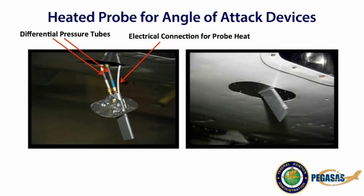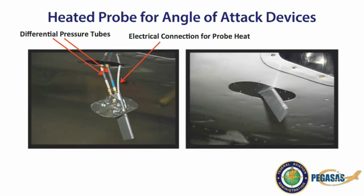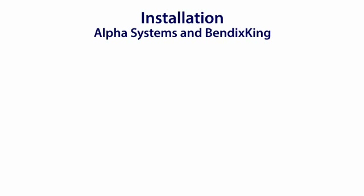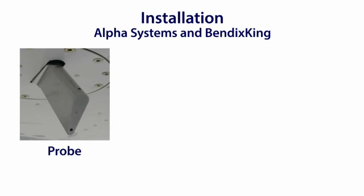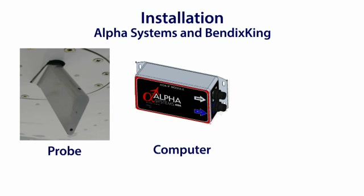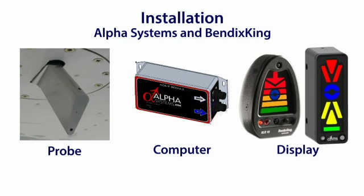It is recommended that probe heat be installed if the AOA system will be utilized in the IMC environment. The Alpha Systems and Bendix King devices utilize a three-part system: a probe that attaches to an inspection panel on the bottom of the aircraft's wing or fuselage, a computer to process inputs from the probe placed out of sight in the cockpit, and the display unit. Installation is simple for aircraft with inspection panels; for aircraft without inspection panels or made of fabric, installation is more complicated but not impossible.